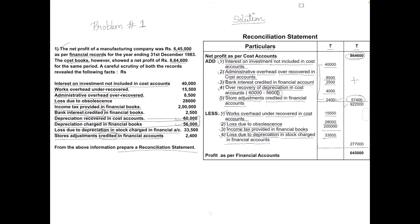Now add the four items to be deducted: 15,500 plus 28,000 plus 2,00,000 plus 33,500. The total of these four figures is 2,77,000. From 9,22,000 minus 2,77,000 you get 6,45,000, and this 6,45,000 is the profit as per financial accounts.